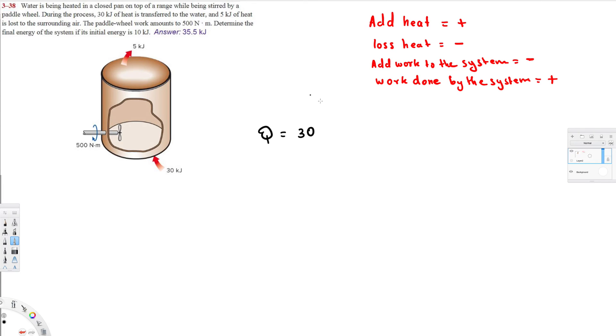And then we lost 5 kilojoules of heat, so this is going to be negative, right? So we will get 25 kilojoules of total heat. Then if we see work done to the system.